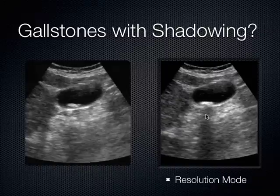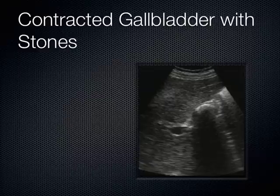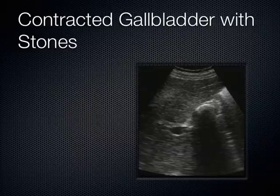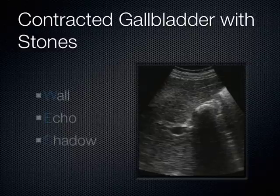Going from general to resolution mode means going up on the frequency, more attenuation, more shadowing. This is what happens when the gallbladder contracts down on a stone — the WES sign. When I'm working in the ER and somebody says they can't find the gallbladder anywhere and all they see is shadows coming out of the liver, I think to myself: sweet, this is going to be a contracted gallbladder around a bunch of stones. Nine times out of ten, that's exactly what I see — and it's called the WES sign.